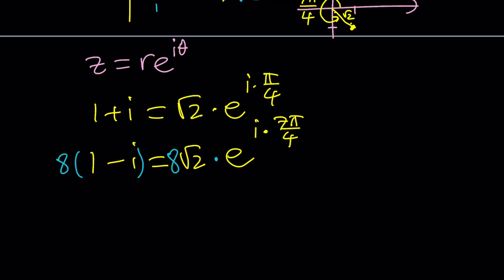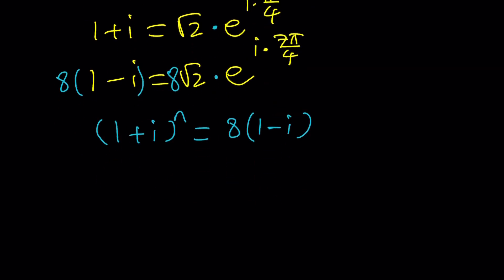Now we have everything we need. Let's go ahead and plug it in. I have (1+i)^n = 8(1-i). Therefore, this is going to become (√2·e^(iπ/4))^n = 8√2·e^(i7π/4).